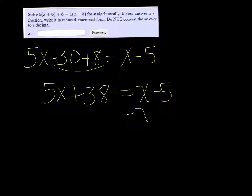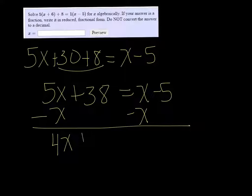I want to get all my x's on the same side, so I'm going to subtract x on both sides and get 4x + 38 = -5.